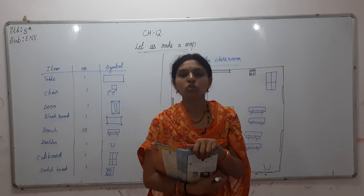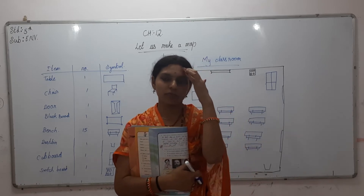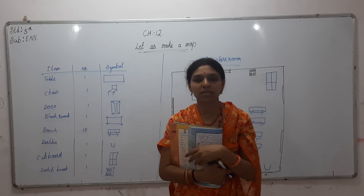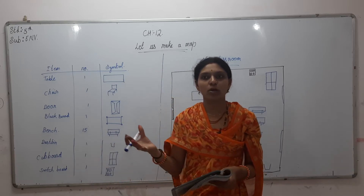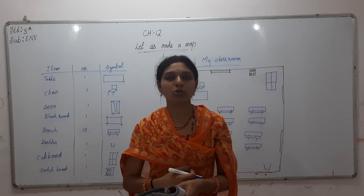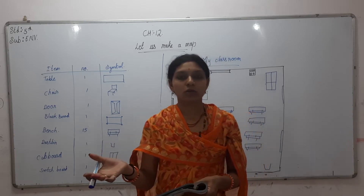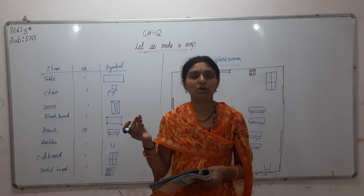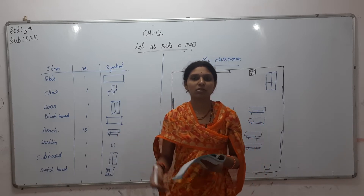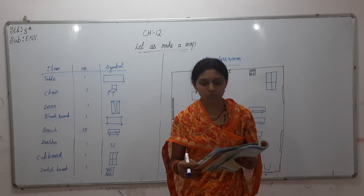Before starting our chapter, do you know what a map is? A map is a symbolical representation of a place that is drawn on a flat surface. Maps provide us various information about that place — like understanding roads of a new city, calculating distance between two places or cities, and collecting information about mountains, rivers, and different things.